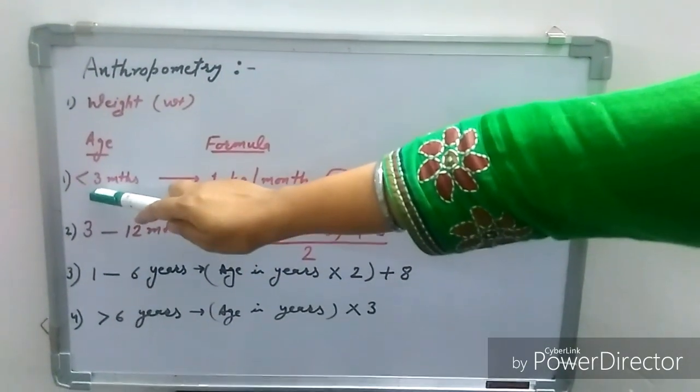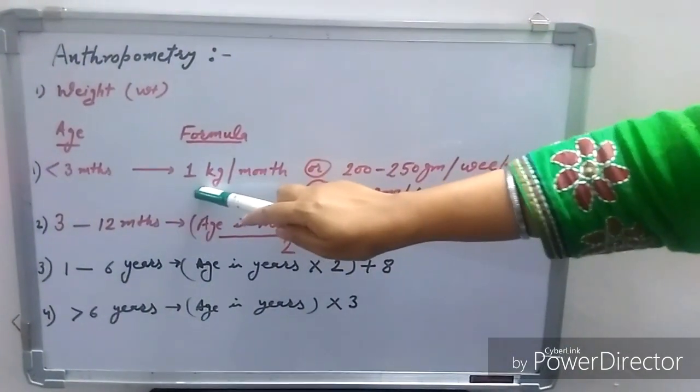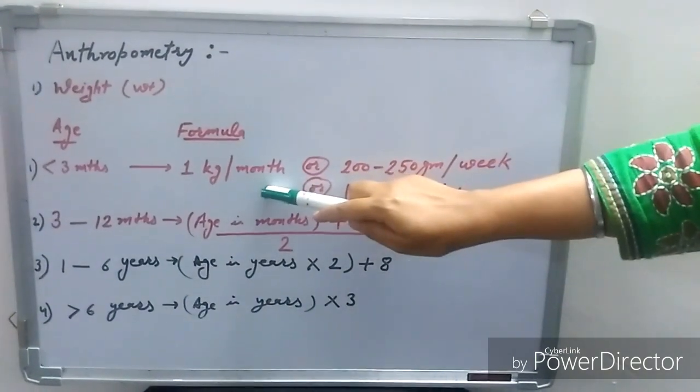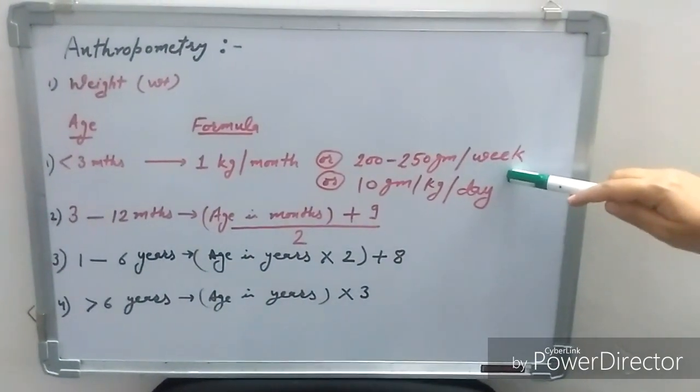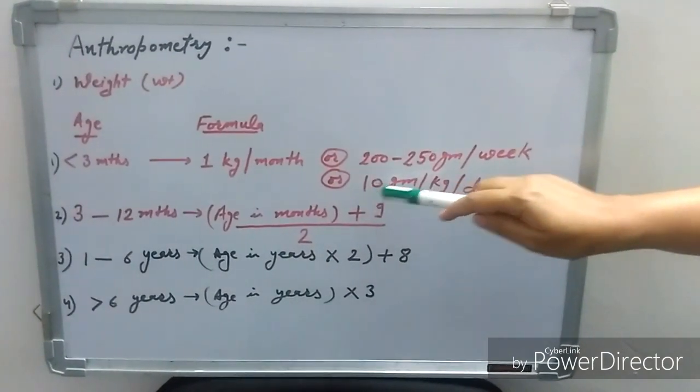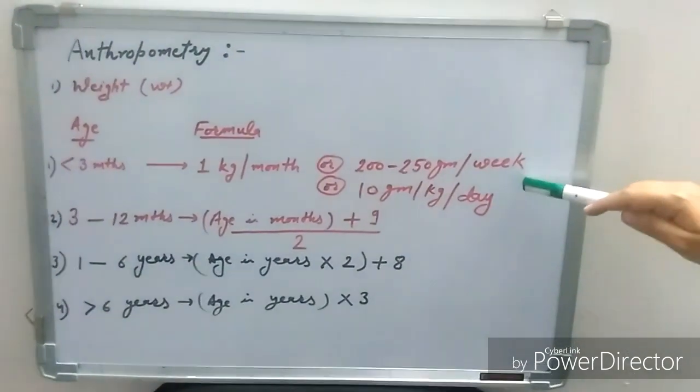If baby age is less than three months, then one kilogram per month or 200 to 250 grams per week or 10 grams per kilogram per day, baby will gain the weight.